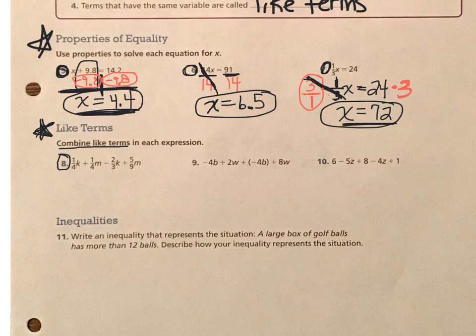Number 8, of course, is a little bit messy because there are fractions involved. But it doesn't mean that it's any more difficult. So the first thing that we're going to do is identify one of the variables in the problem. In this case, we have 1/4 times k. And I'm going to circle the operation and the terms that have the k in them.